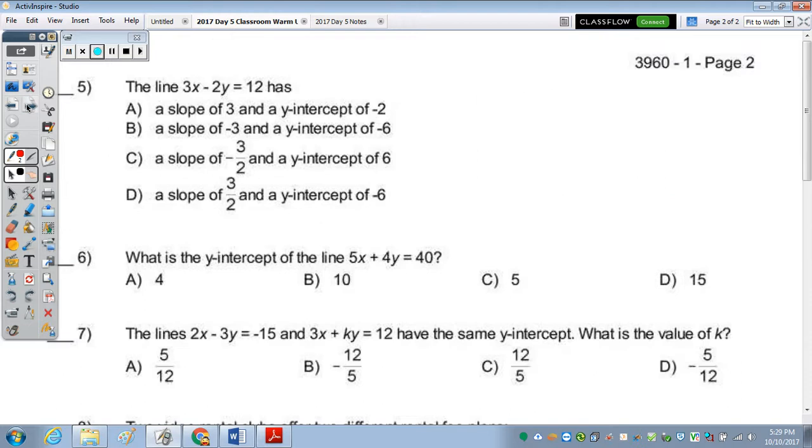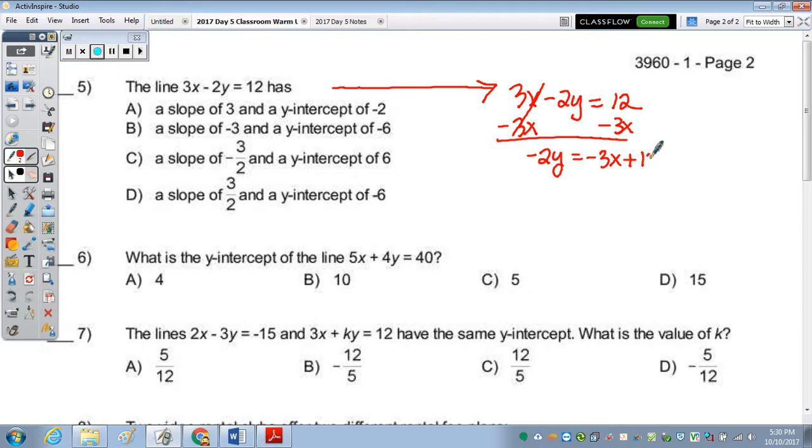Number 5, the line 3x minus 2y equals 12 has, well, in order to see the slope and y-intercept, we have to solve for y. So 3x minus 2y equals 12. So the first step would be to subtract 3x. We have negative 2 times y equals 12 minus 3x, but I'm going to write it in terms of y equals mx plus b. Then divide everything by negative 2.